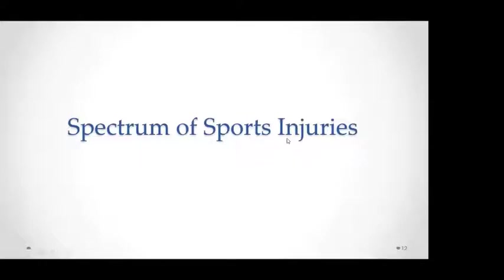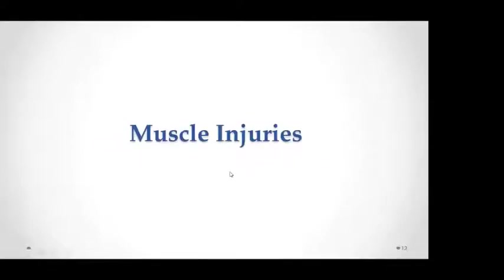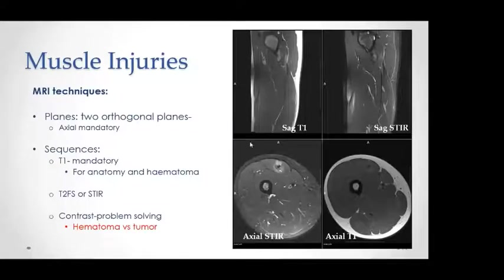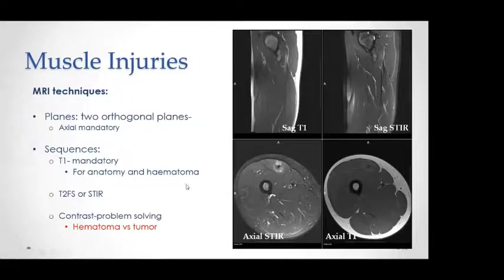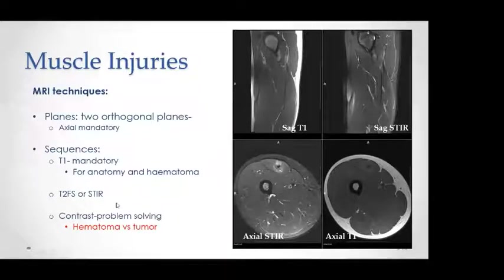Moving on to the spectrum of sports injuries, starting with muscle injuries. The way we image muscles is a basic MRI protocol using fluid-sensitive fat-saturated sequences in two planes — axial and a second orthogonal plane — plus T1 in two planes. We don't routinely give gadolinium for patients with muscle injuries; we only give contrast if there is suspicion of tumor versus hematoma.